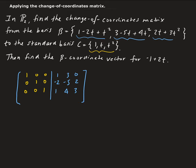Now once we have this, since the left side is the identity matrix — a three-by-three identity matrix — this augmented matrix is already in reduced row echelon form. So we don't need to do anything further here. We basically have our change of coordinates matrix from beta to C.